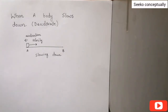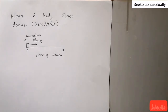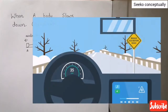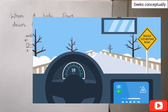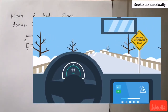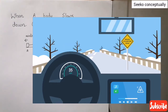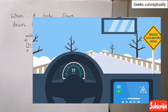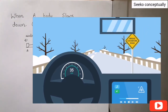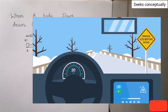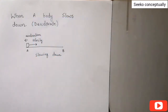Poochah gaya hai ke kya acceleration aur velocity ek hi body ke ek hi time par mukhtalif direction mein ho sakti hai ya nahi. Jahan ho sakti hai — jab bhi body slow down ho rahi ho, decelerate ho rahi ho, then the velocity is actually in one direction and the acceleration is in the opposite direction of the velocity.